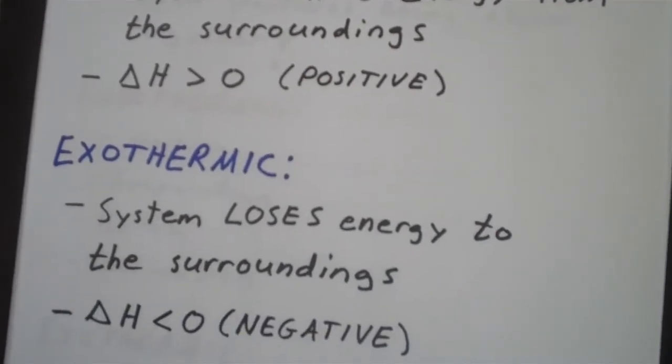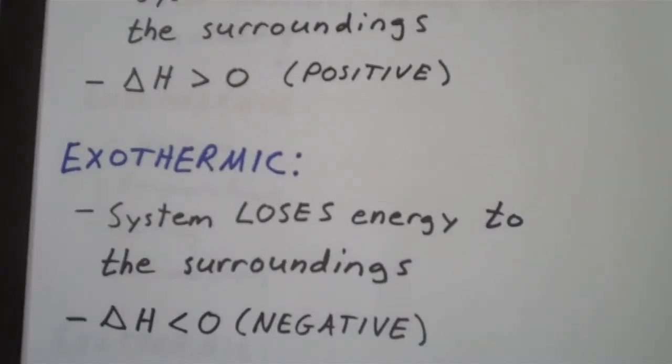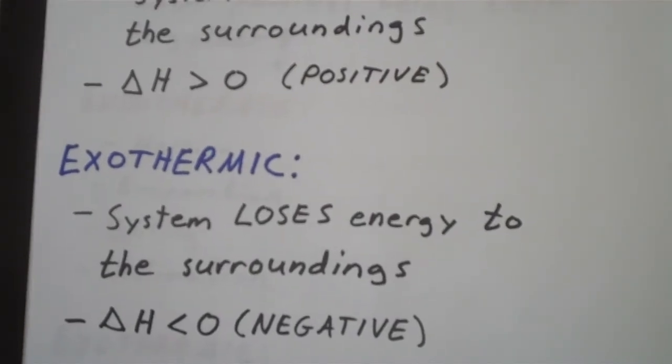Conversely, an exothermic process is one in which the system loses energy to the surroundings. And delta H is less than zero or negative.